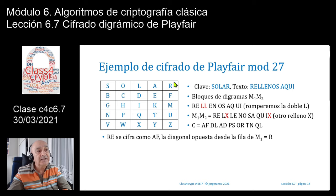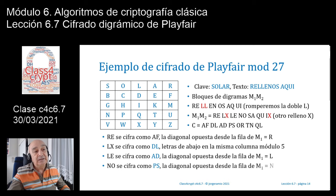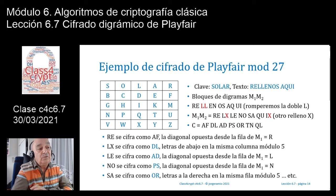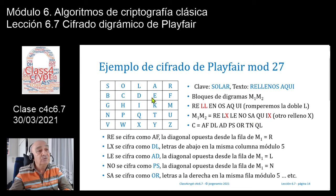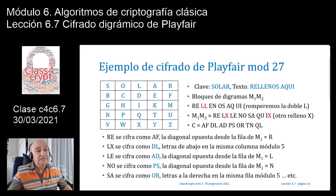¿Cómo obtenemos la cifra RE → AF? La R está aquí y la E está aquí, son diagonal opuesta, y partiendo de la primera letra obtenemos AF. ¿Cómo ciframos LX? La L se va a cifrar como D y la X como L, dando DL. Para SA: la S y la A están en la misma fila, la S se cifra como O y la A se cifra como R, dando OR. El sistema es muy sencillo, sin ningún tipo de dificultad, y voy cifrando bloques de dos letras.